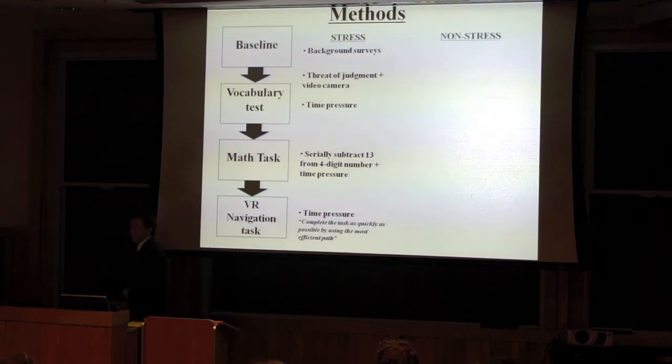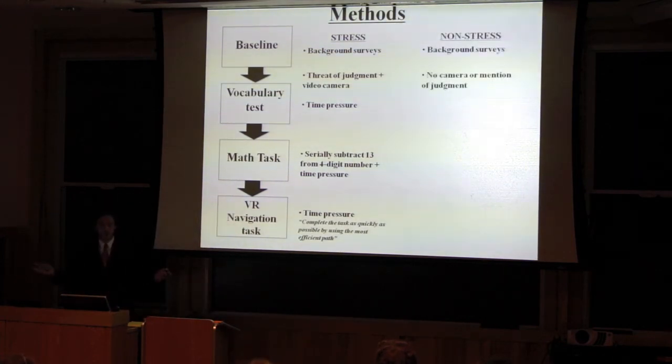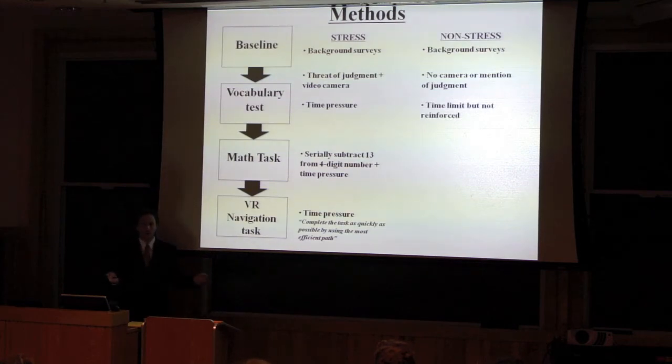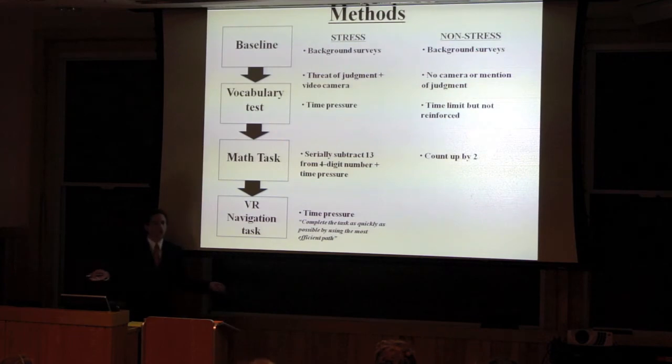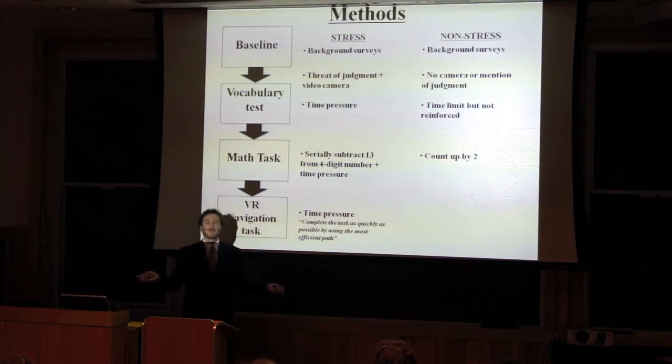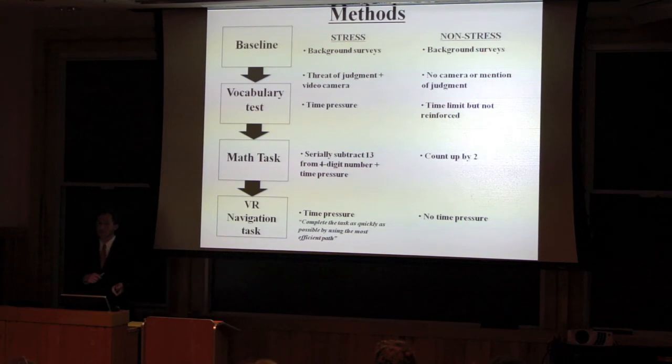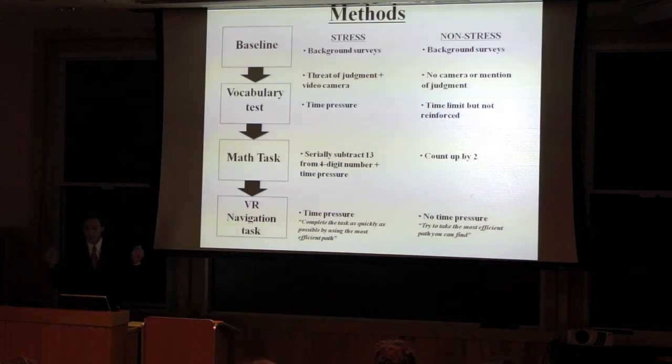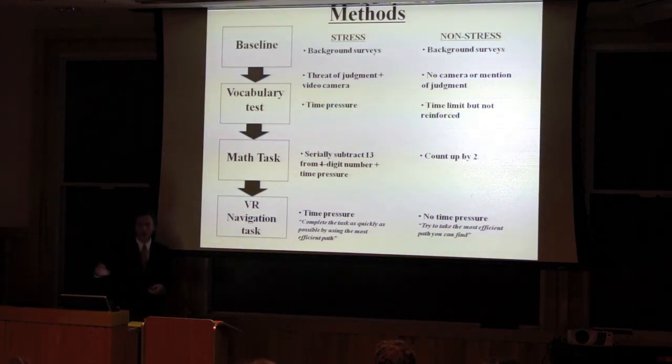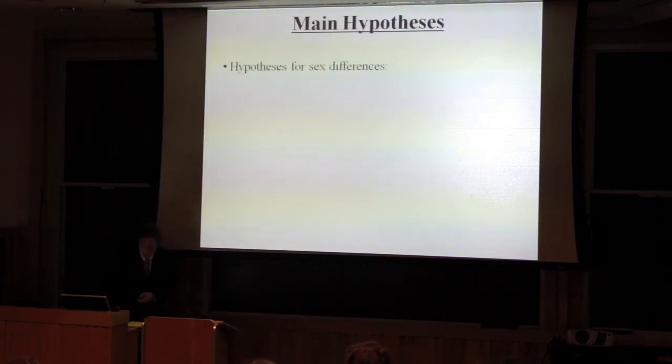In the non-stress group, it was a lot more fun. There was background surveys, there was no camera running. There was a time limit, the same amount of time, but they were not reminded of this at any point. They then sat quietly in the chair and counted up by two. And then they performed the same task. The difference here is that while in the stress group they were told to complete the task as quickly as possible by following the most efficient path or you will fail, in the non-stress group they were just told to try and take the most efficient path that you can. So they were still being told to take an efficient path, but it wasn't used as a stressor.